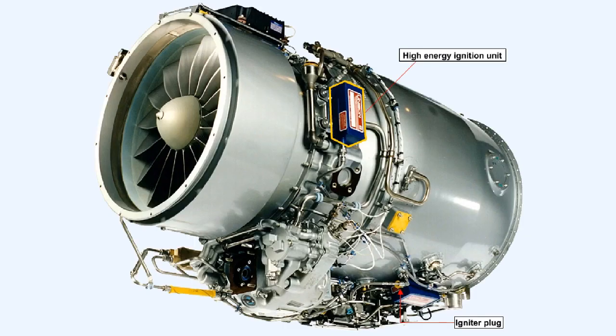This diagram shows the high-energy ignition unit mounted on the side of an engine and also the position of the igniter within the combustion chamber.